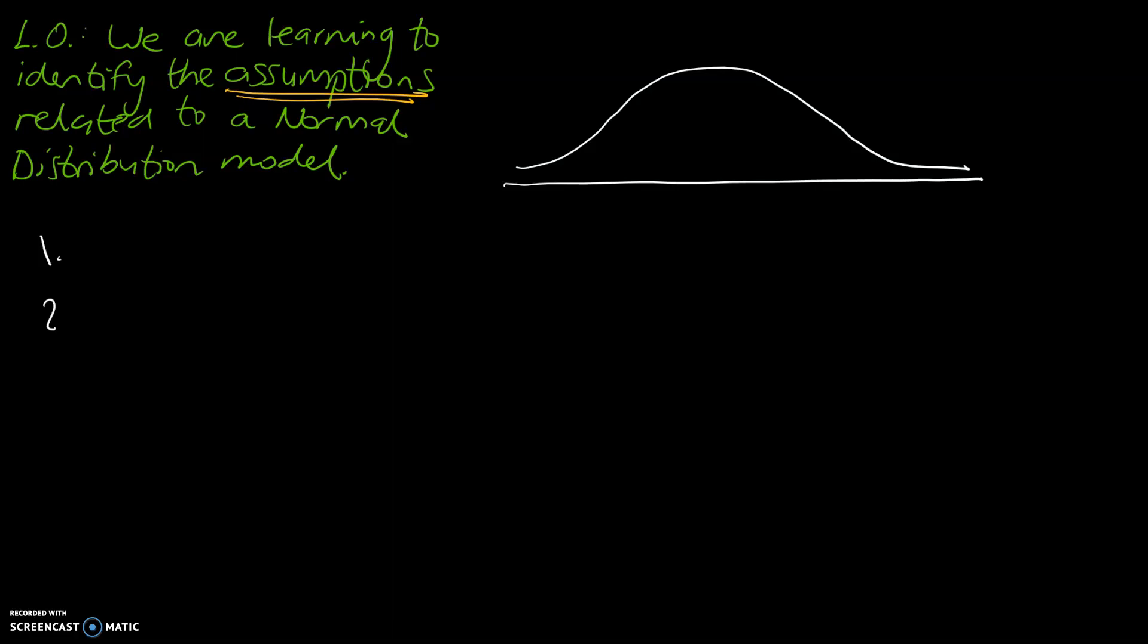So on the left here, I'm going to write down 1, 2, 3, 4, and 5, and that's because there are five assumptions that underpin a normal distribution model.